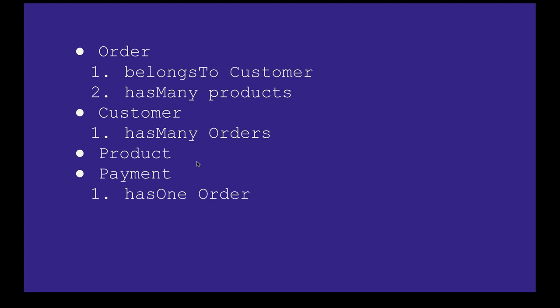A product can belong to multiple orders. Payment has a one-to-one relationship with order — order will have only a single payment. Customer has many orders, meaning a customer can have multiple orders. These are the theoretical representations of the relationships.